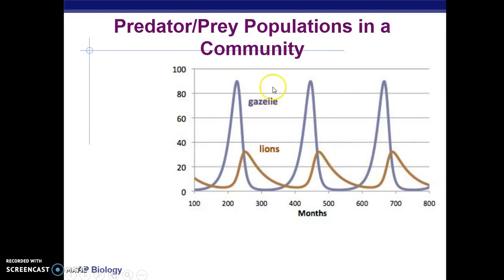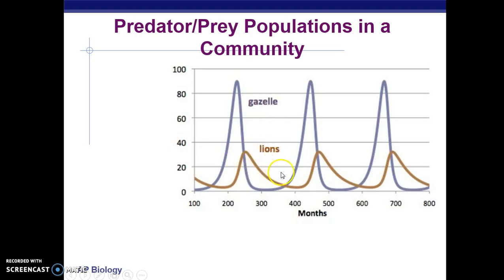In this equilibrium, the gazelles go up, lions go up, and then in response the gazelles go down. There's an equilibrium relationship between the gazelles and the lions. After the lions go down, the gazelles rebound, and the cycle continues.